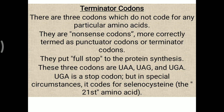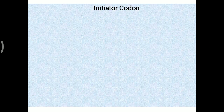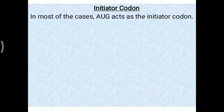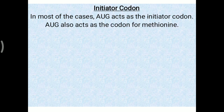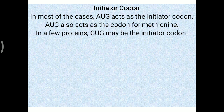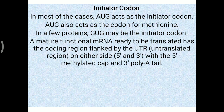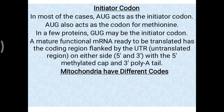UGA is a stop codon, but in special circumstances it codes for selenocysteine, the 21st amino acid. Regarding the initiator codon: in most cases AUG acts as the initiator codon and also codes for methionine; in a few proteins, GUG may be the initiator codon. A mature functional mRNA to be translated has a coding region flanked by UTRs (untranslated regions) on either side — a 5' cap and a 3' poly-A tail — which are not translated.